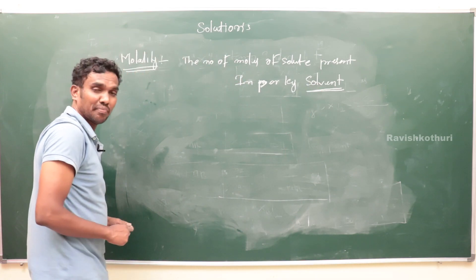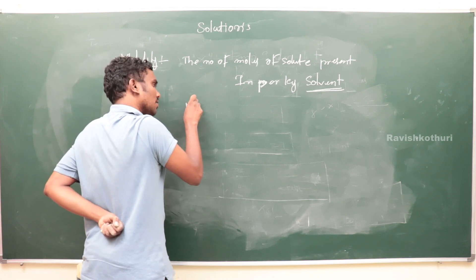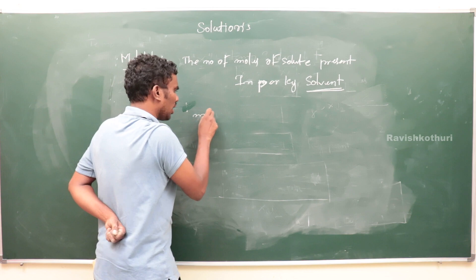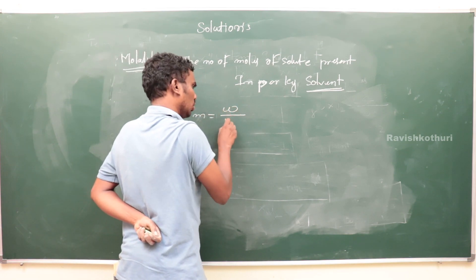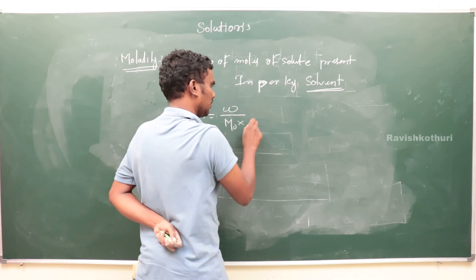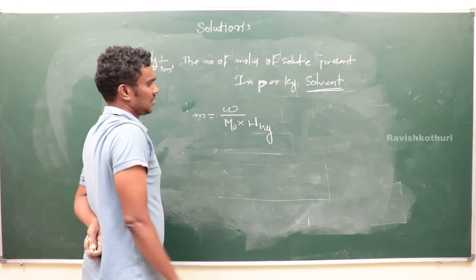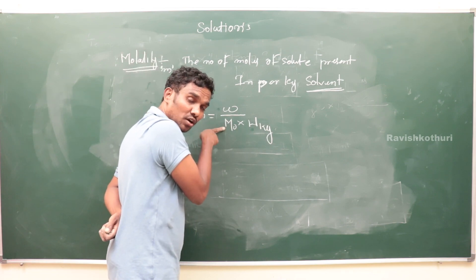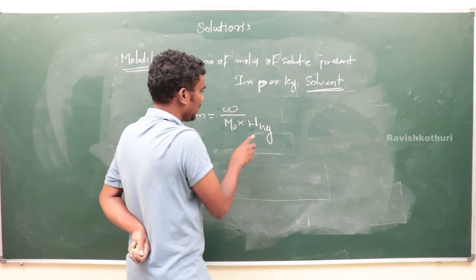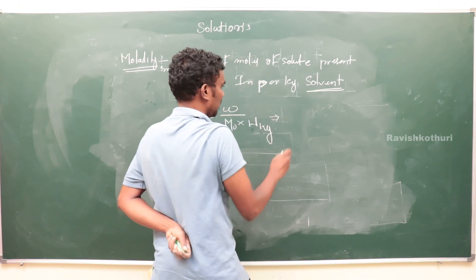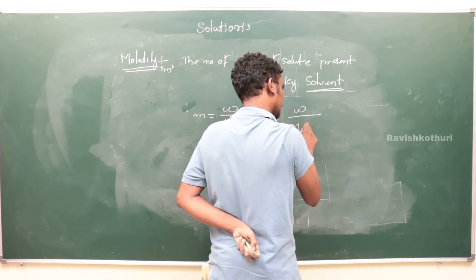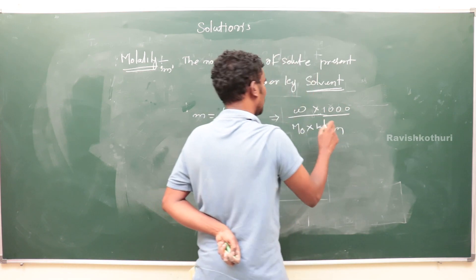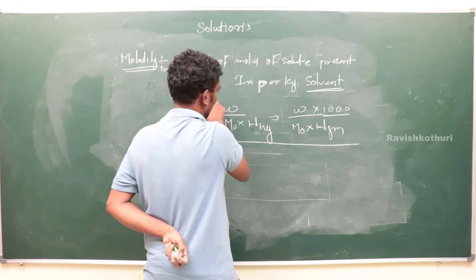Molality is denoted by small m. The formula is: m = (weight of solute / molecular mass) / weight of solvent in kg. This is the solute molecular mass (M₀). If solvent weight is in grams, multiply by 1000 to convert to kg.